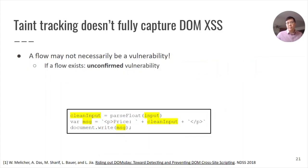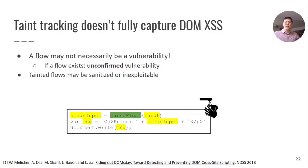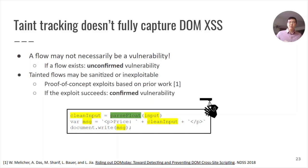However, a flow may not necessarily be a vulnerability, and thus we call it an unconfirmed vulnerability. Tainted flows may actually be sanitized or otherwise inexploitable. In this example, an input does reach a sensitive sink function, but must pass through the parseFloat function, which ensures that only legal decimal numbers are passed to the function. Prior work has shown that by generating proof-of-concept exploits, it's possible to test whether or not these DOMXSS tainted flows actually succeed and are true vulnerabilities. We do the same, and if the exploit succeeds, we then label it to be a confirmed vulnerability.